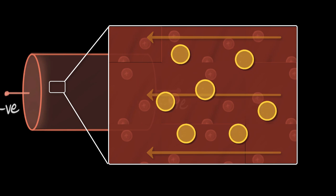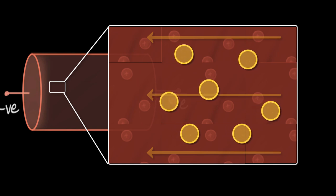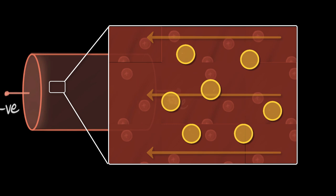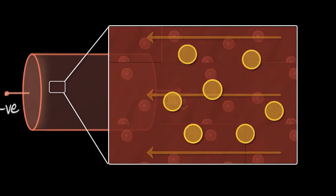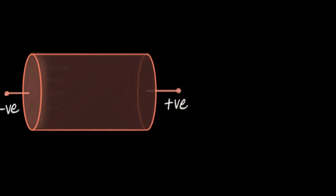And so now the big question is, how do we calculate the current from this drift velocity? How do we begin calculating current in terms of drift velocity? I think we can start by recalling what the definition of current was. We define current as the amount of charges flowing per second.